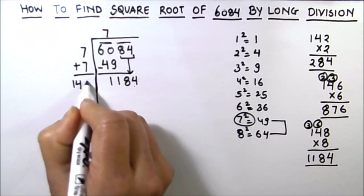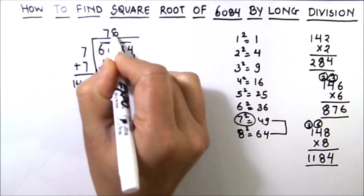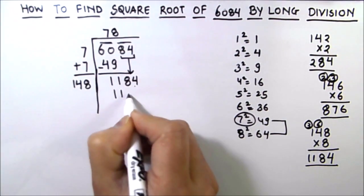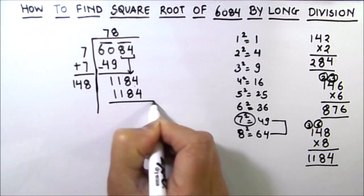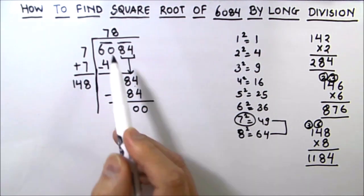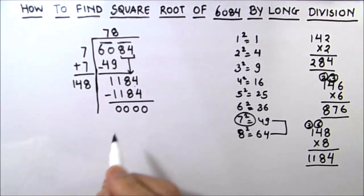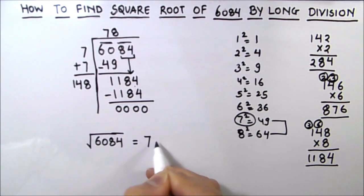We are going to annex. So our divisor is 148 and the quotient is 8. And the product is 1184. So we got the remainder as 0. This completes our long division. So the square root of 6084 is equal to 78.